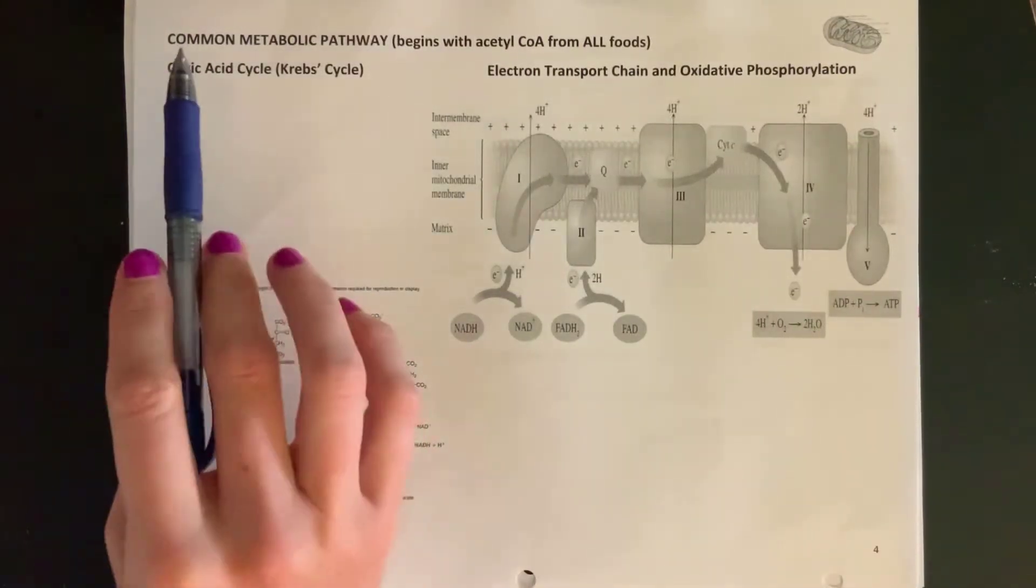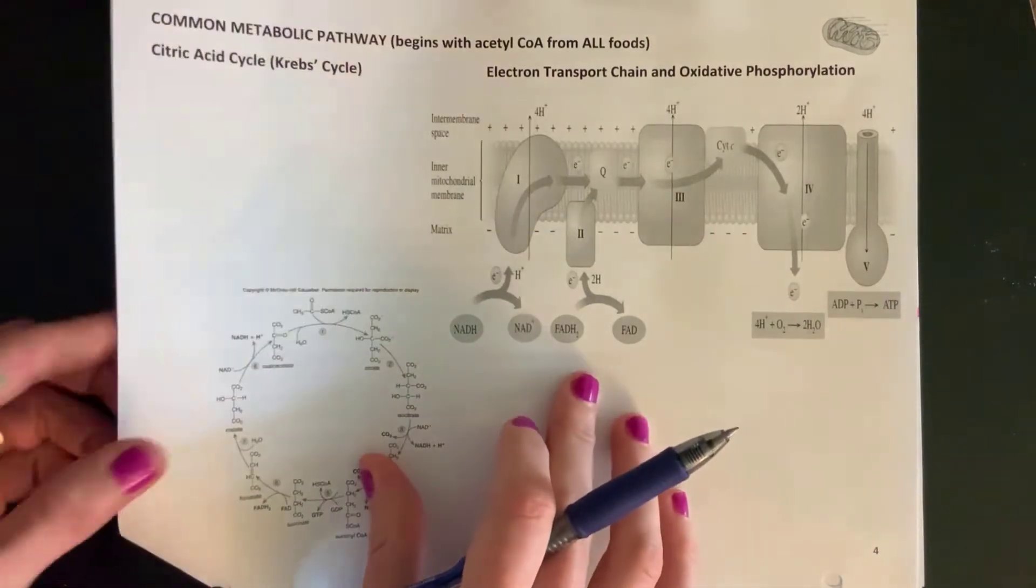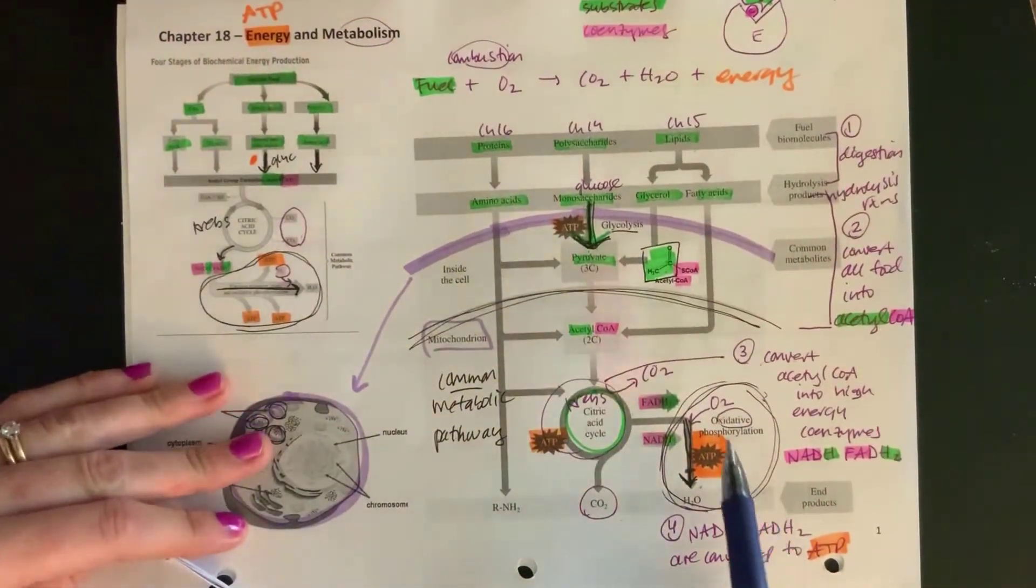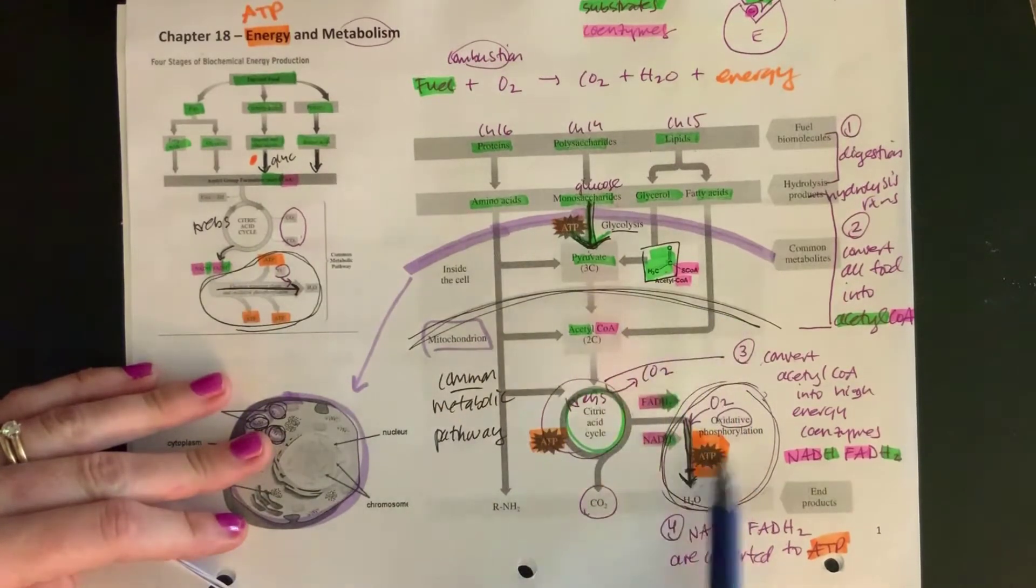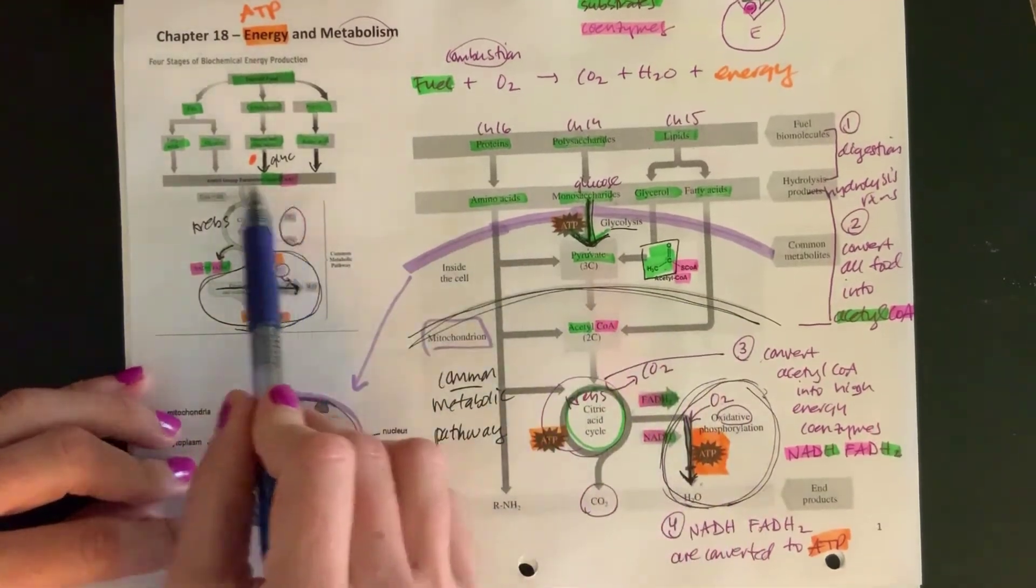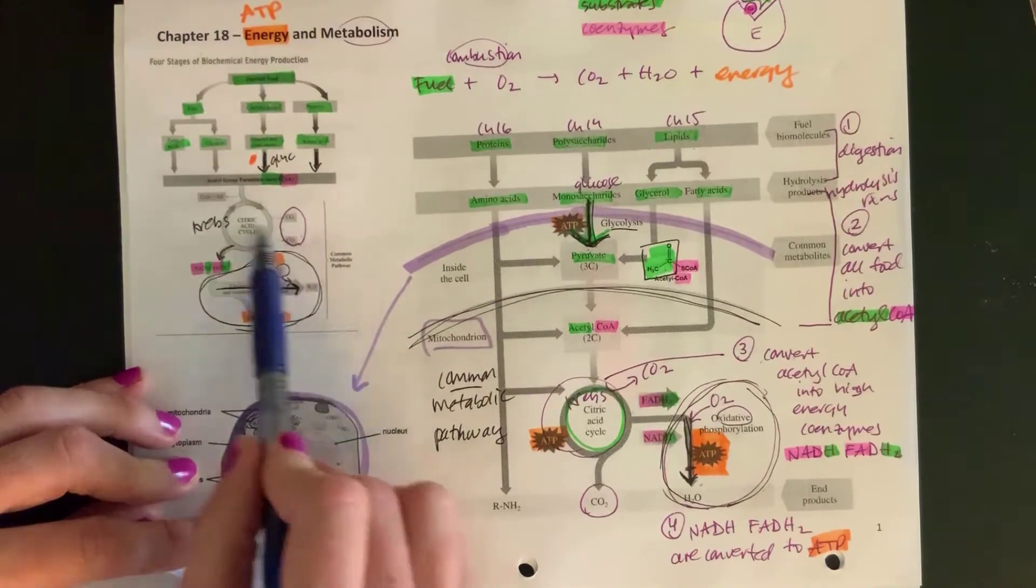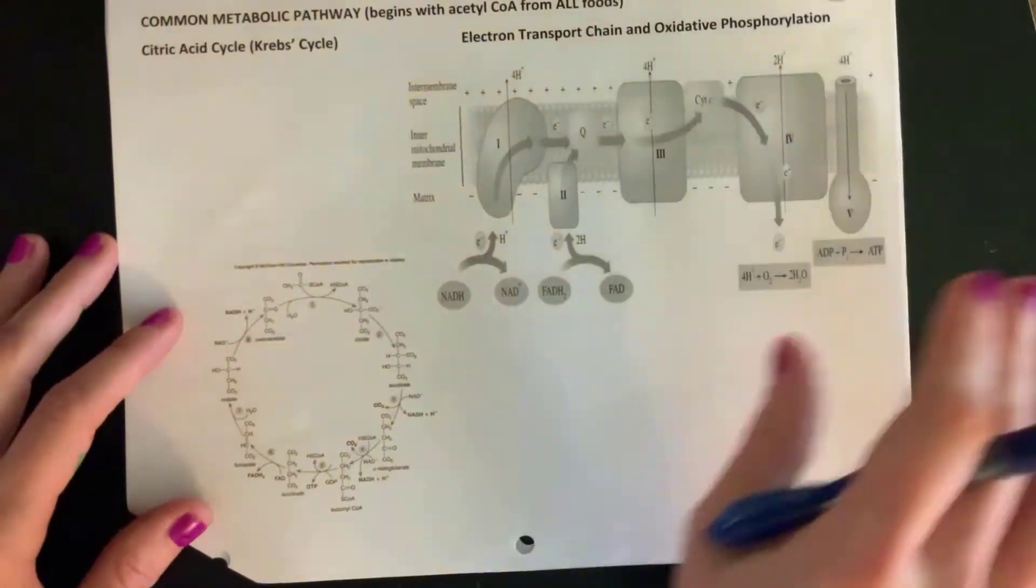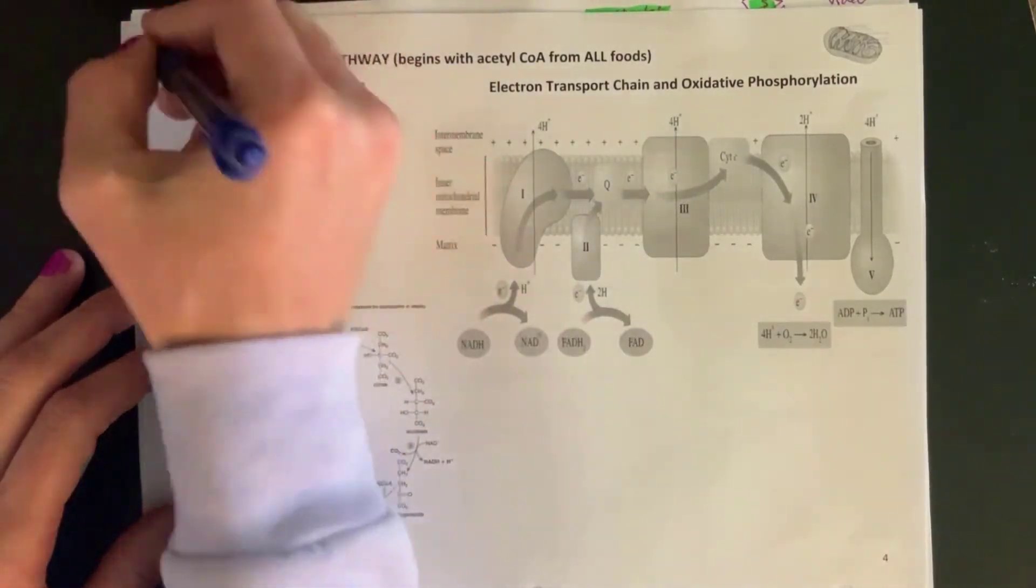We're going to look at this slide at the common metabolic pathway. The common metabolic pathway is happening in the mitochondria, where everything is the same no matter what food you ate. So that's the common metabolic pathway.